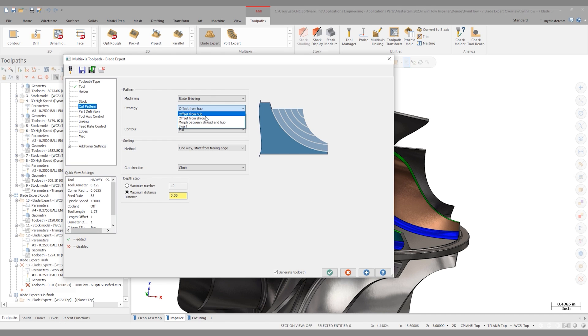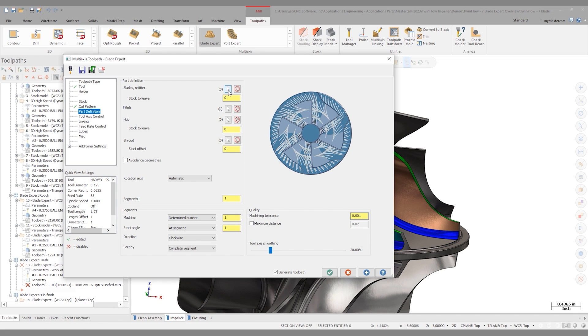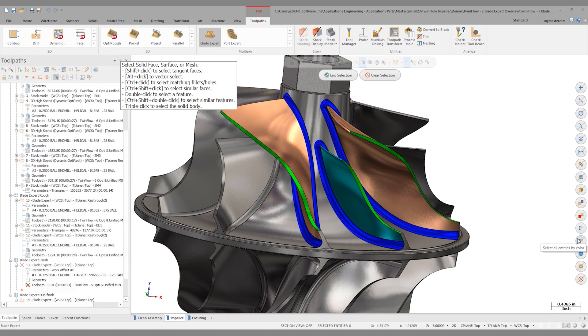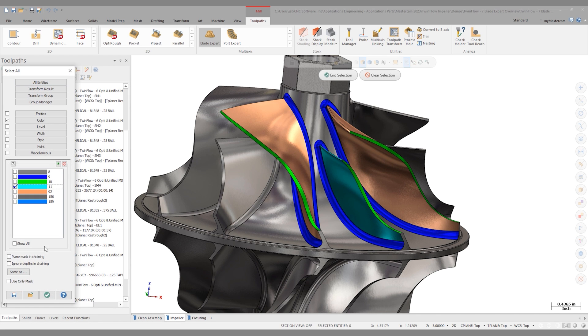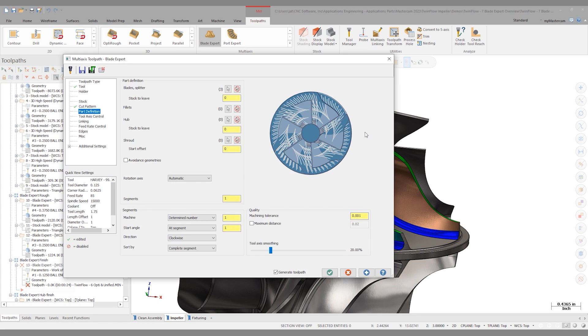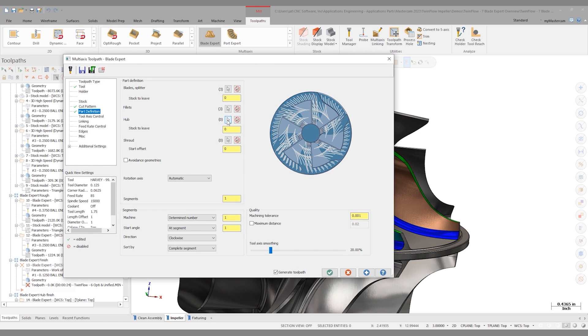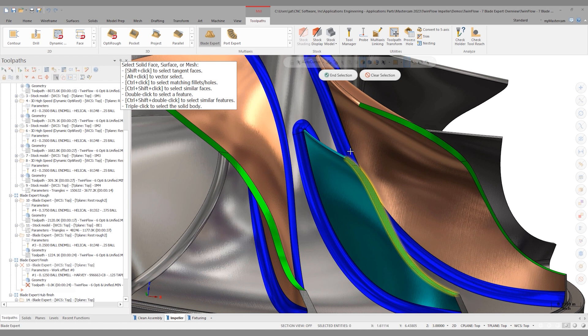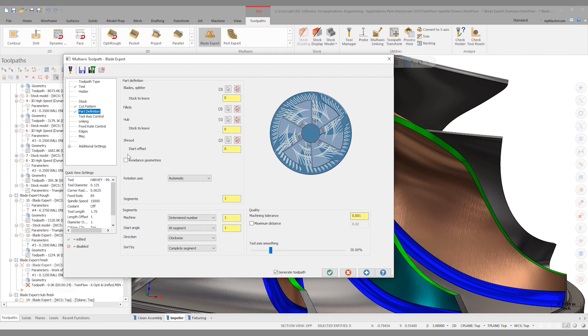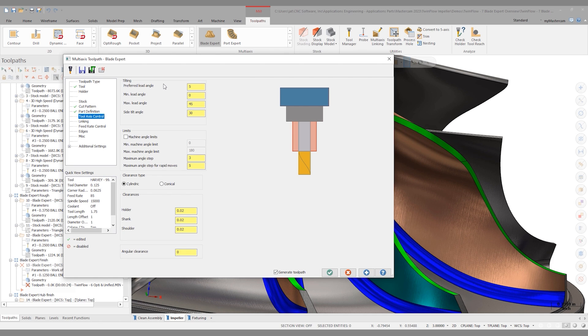My cut pattern, I'm going to be doing blade finishing here, and we're going to be programming that splitter. Now, I've got a couple options. I can do an offset from hub, an offset from the shroud, or a morph between the shroud and hub. This blade is not swarfable, as we talked about before. I'm going to use a morph between shroud and hub. For part definition, for our blades, we're only looking at that splitter. I'll use my color selector here, picking cyan, click OK, and end selection. For the fillets, I'll pick these three fillets down around the bottom of the part. For the hub, a single click will get me that hub. And the shroud is going to be these green surfaces at the top.